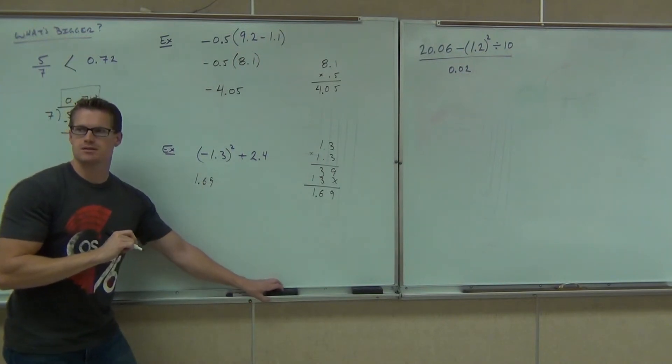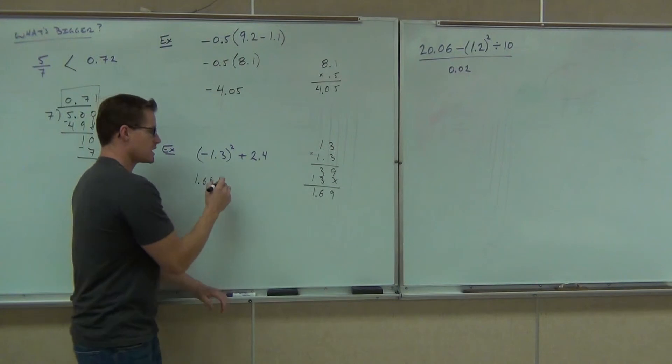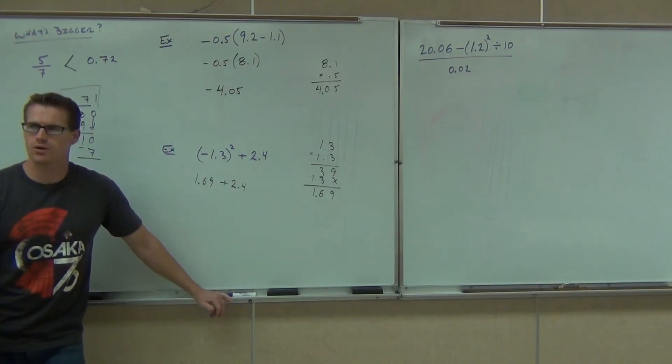So is it positive or negative 1.69, folks? Positive. Why positive? Because of negative times. Good. Yeah, you're squaring the numbers. Negative times a self gives you a positive plus 2.4. Can you add 1.69 plus 2.4? Yes. Sure. Do it off to the side if you want.